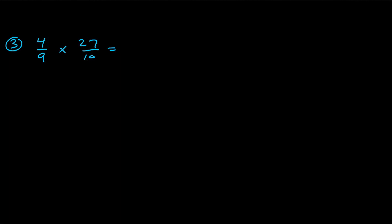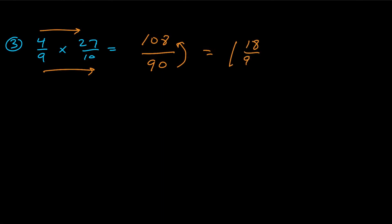For number three we're switching to multiplication: four ninths times twenty-seven tenths. One way is to multiply horizontally across — four times twenty-seven is one hundred eight, and nine times ten is ninety. Ninety goes into one hundred eight once with eighteen left over. Reducing eighteen over ninety: nine goes into eighteen twice, and nine goes into ninety ten times, giving us one and one-fifth.